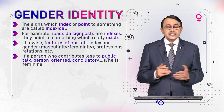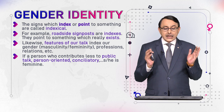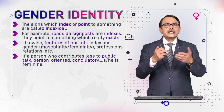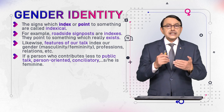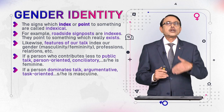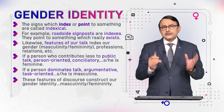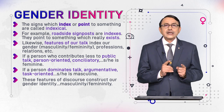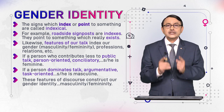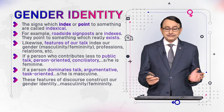For example, if a person contributes less to public talk, is person-oriented, loving and caring, takes care of others' feelings and emotions, doesn't want to hurt others, and is conciliatory — doesn't like to confront others in talk — these features would index the fact that a woman is talking.